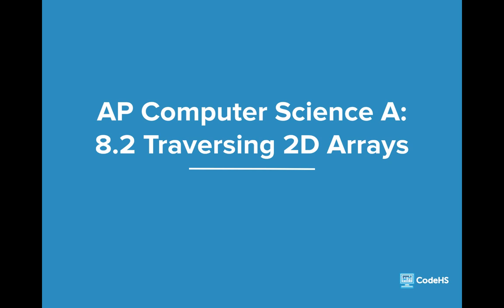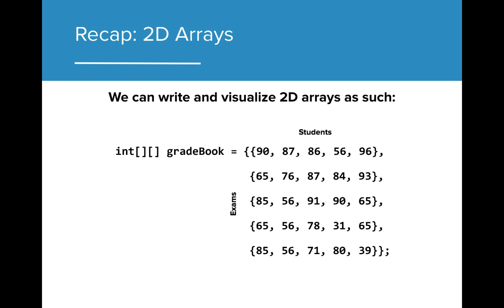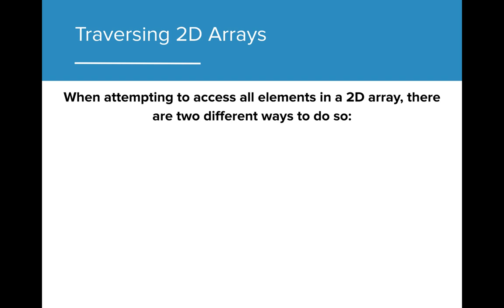Hi! In this lesson, we'll take a deeper look at traversing 2D arrays. In the last lesson, we learned that we can store arrays within other arrays. These 2D arrays can be written and visualized as a grid, where the rows represent the arrays stored within the 2D array, and each column represents an individual value stored within the 1D array. When attempting to access all elements in a 2D array, we can do so in two different ways.